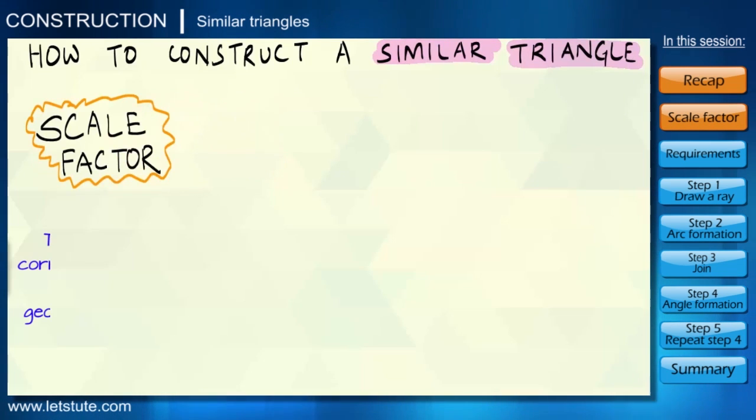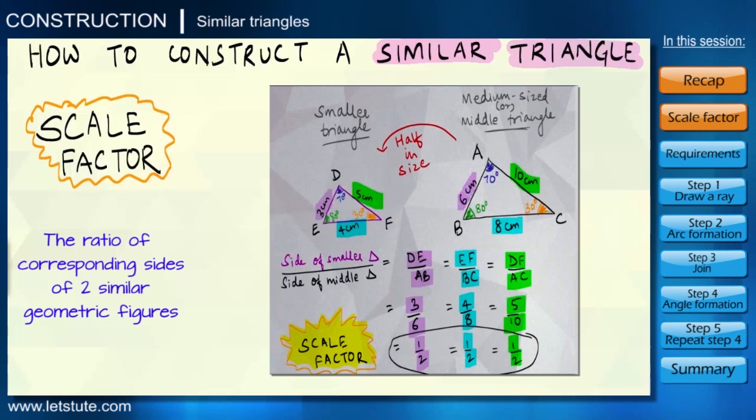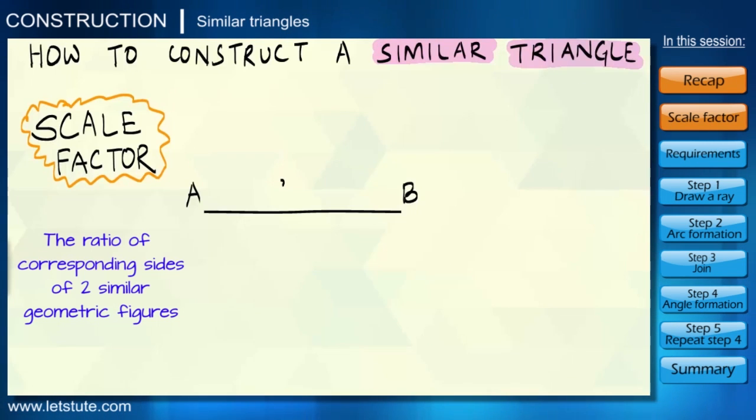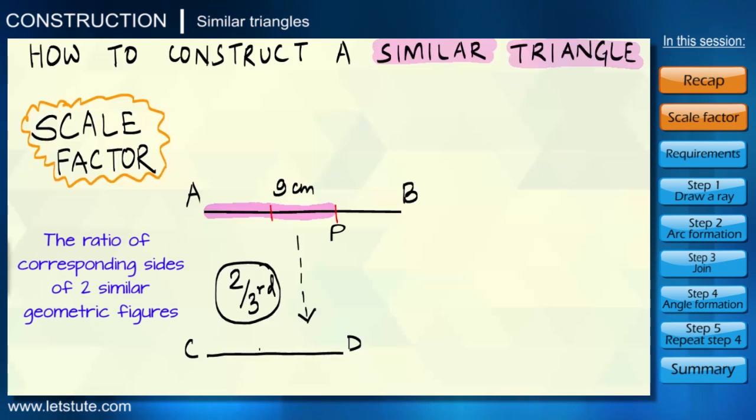Now what is a scale factor? It is a ratio that gives us an idea about how big or how small a triangle has to be. For instance, if we draw a line segment AB of length 9 centimeters and we wish to get another similar line segment but it should be just two-thirds of this one, then what we can do is form three equal portions on this line segment and just consider length equal to two portions - that is 3 plus 3 equals 6 centimeters.